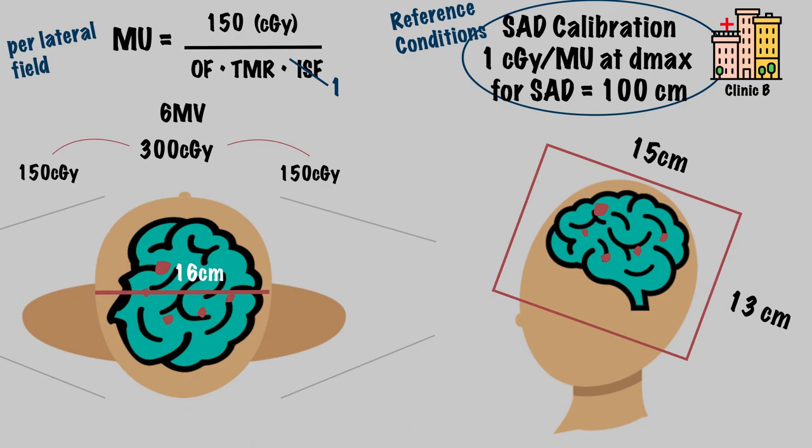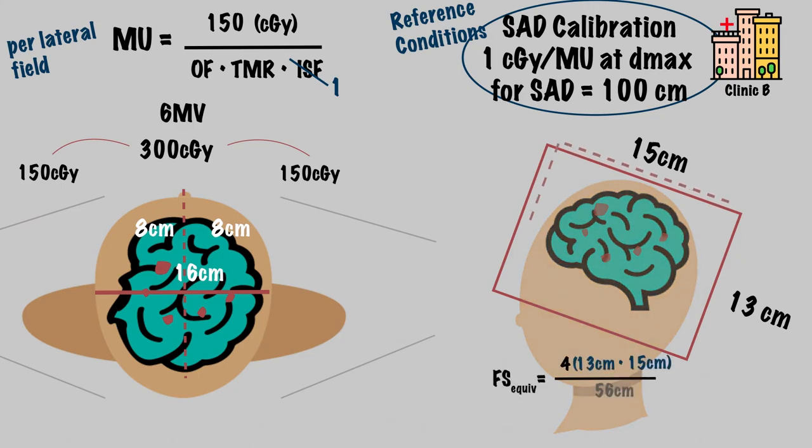Again, we will need the equivalent square field size and treatment depth to look these values up. For a hand calculation with an SAD setup, depth is half the separation of the head, so 8 centimeters in this case. The field size must be converted to an equivalent square, so the area of 13 times 15 is multiplied by 4, and then divided by the perimeter of 56, which altogether gives us about 14 centimeters. Now we can use our lookup tables.